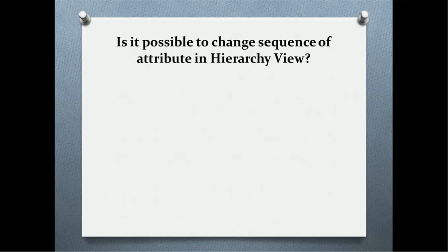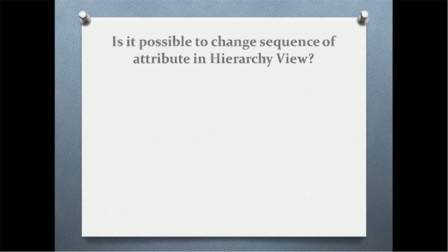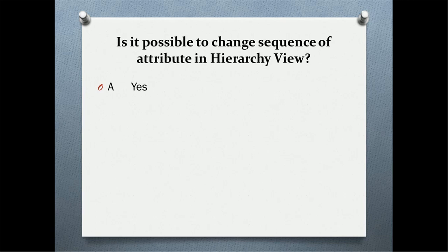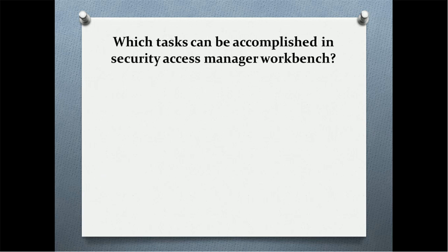Next question: is it possible to change the sequence of attributes in a hierarchy view? The hierarchy can be viewed in Hierarchy Manager or in the IDD application. When you view an entity, it shows columns like name, row ID, or other business columns. The correct answer is yes — we can change the sequence of attributes using the Hierarchy Manager section, configuring which attribute appears first, second, and so on.